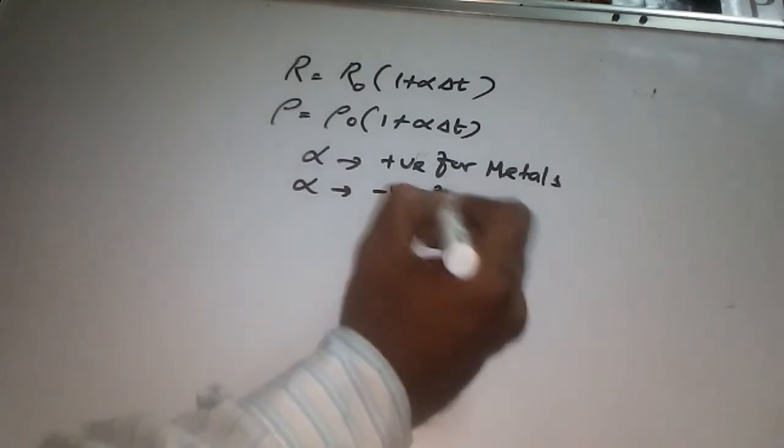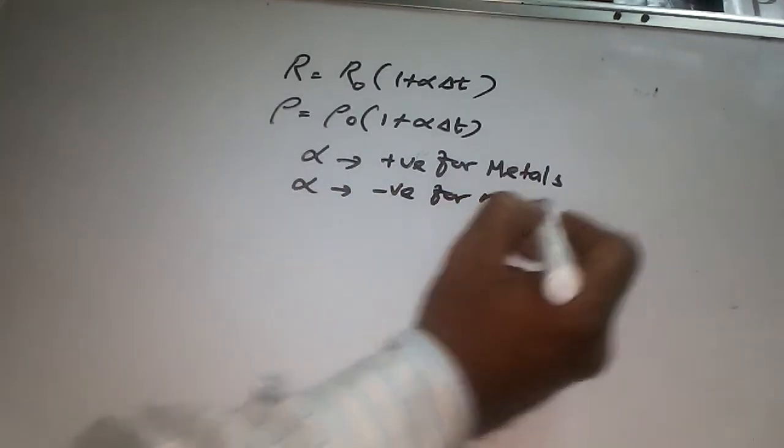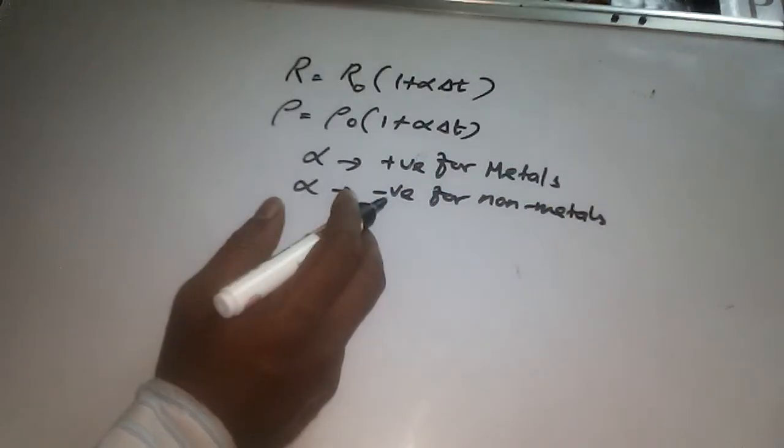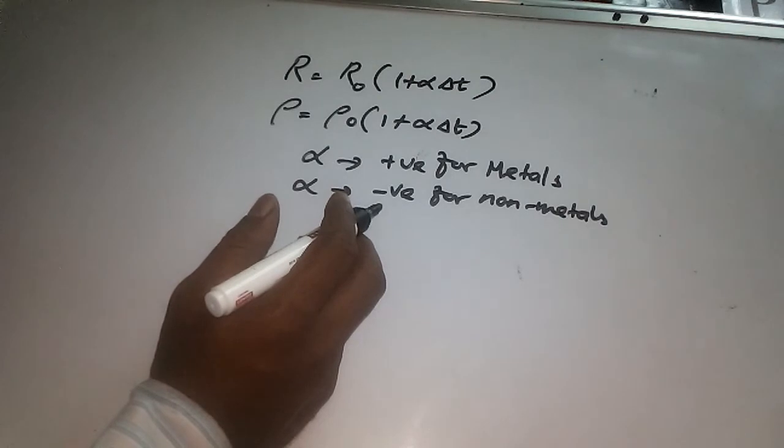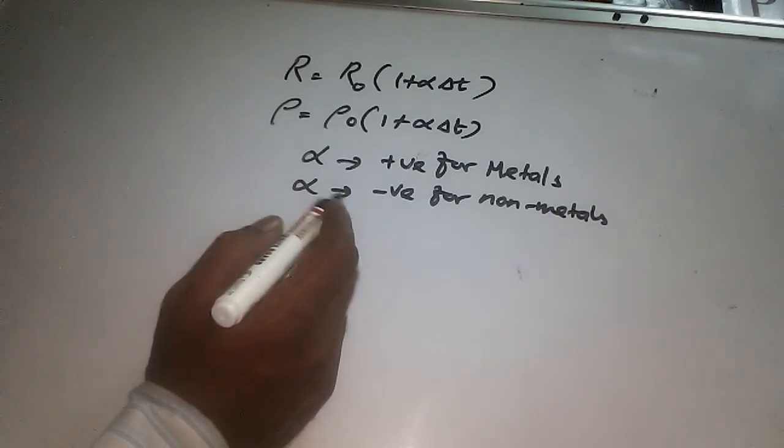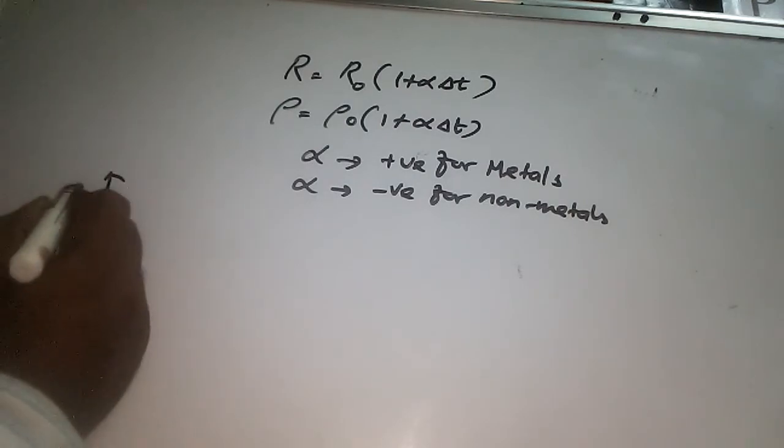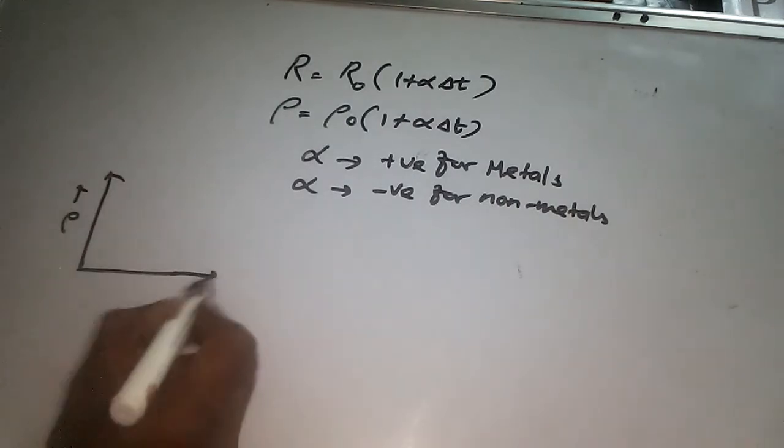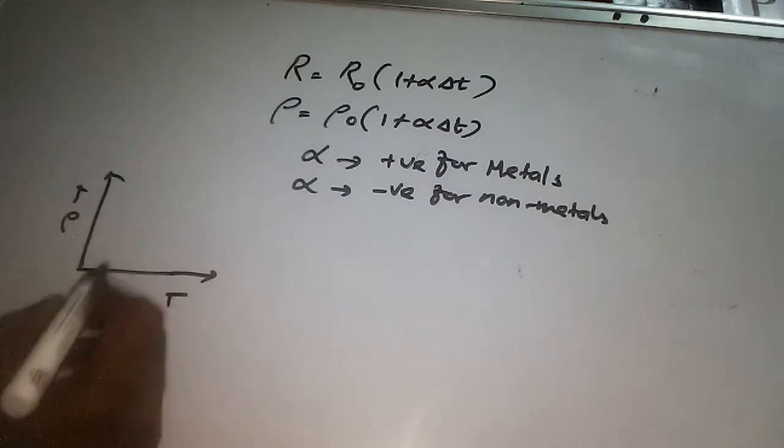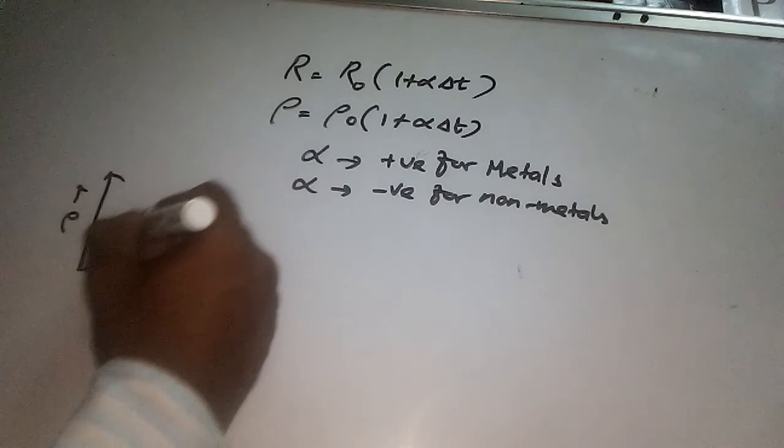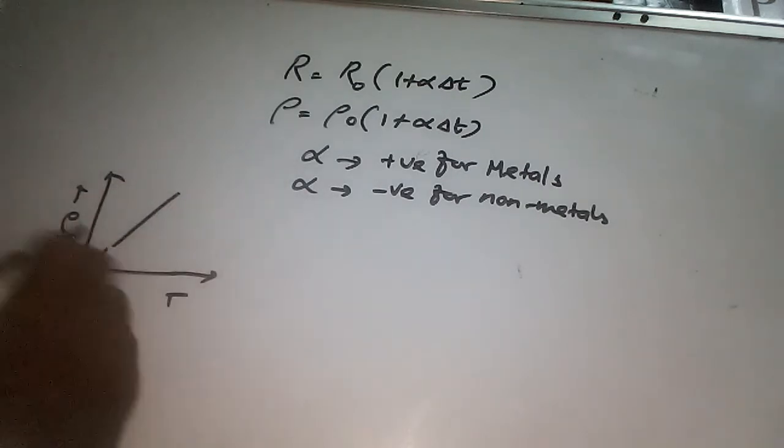We can see graphs for resistivity of metals, non-metals, semiconductors, and superconductors. Take resistivity along the v-axis and temperature along the x-axis. The curve will be a straight line, that is, the graph between these two is a straight line after making a small curve.